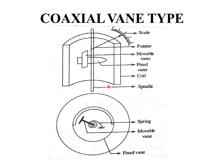This is the construction of the coaxial vane type. The parts — fixed vane, movable vane, pointer, scale, coil, and spindle — are similar to those of the radial vane type. If the movable vane and the fixed vane are sections of coaxial cylinders, then it is called a coaxial vane repulsion type instrument. The working is very much similar to that of the radial vane type.